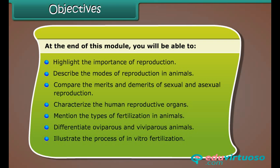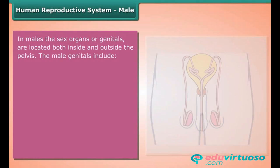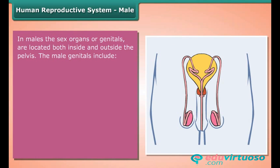You'll also be able to characterize the human reproductive organs, mention the types of fertilization in animals, differentiate oviparous and viviparous animals, illustrate the process of in vitro fertilization, and explain the phenomenon of cloning.